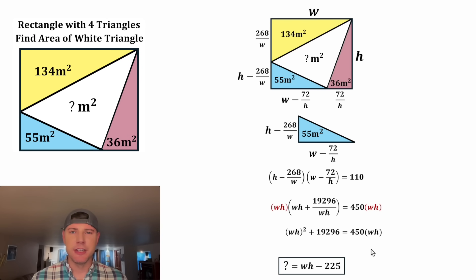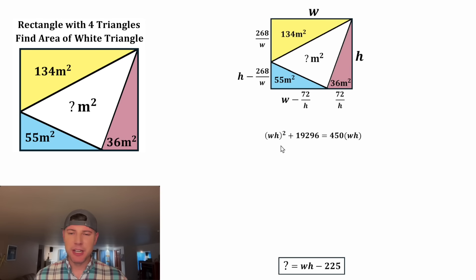And on the right-hand side, we'll have 450 WH. And now if we think of WH as a variable, we have a quadratic because we have a WH squared, a WH, and a constant.